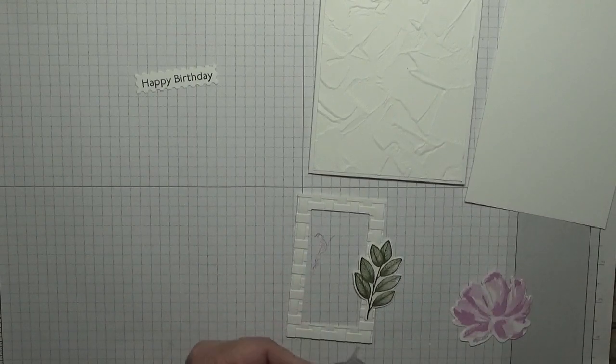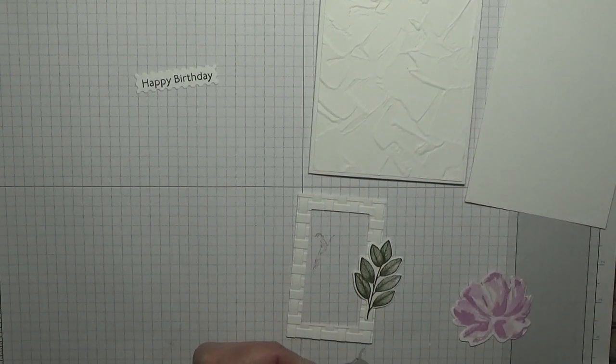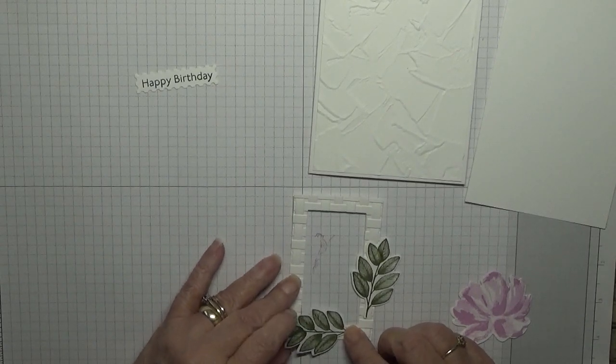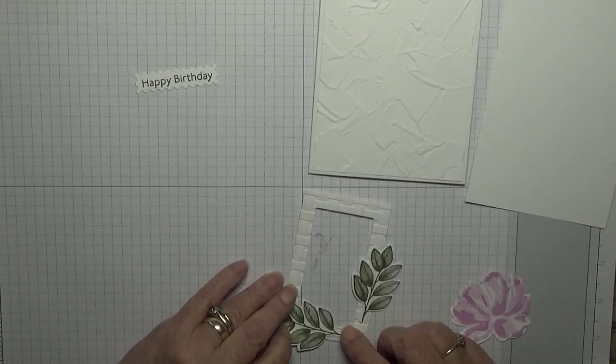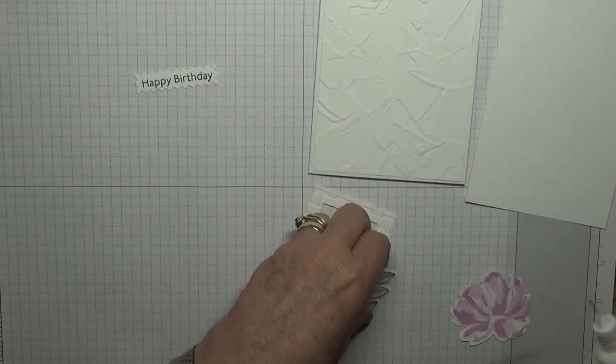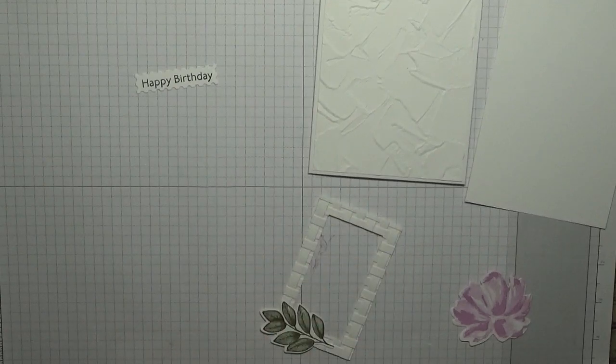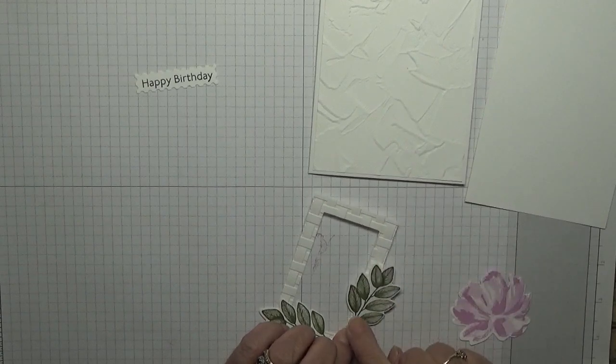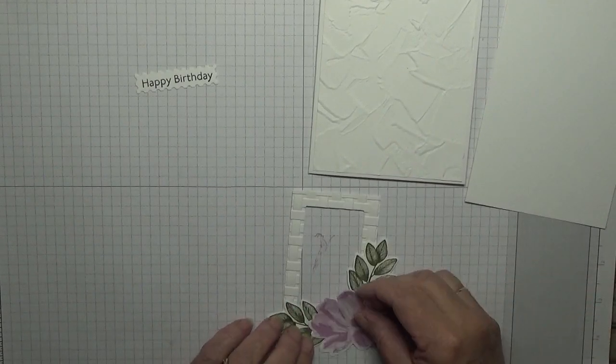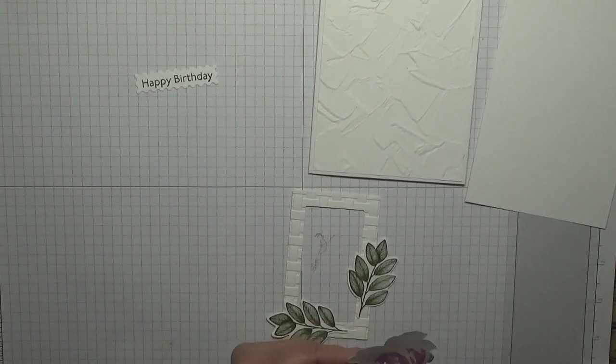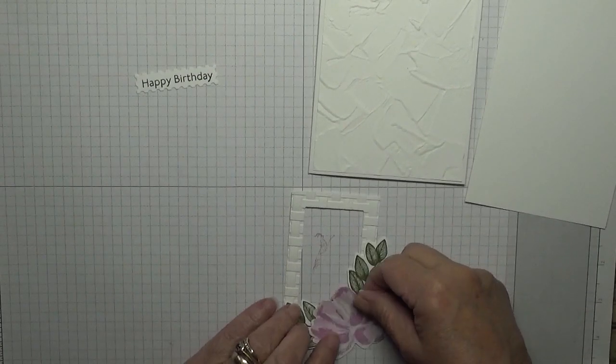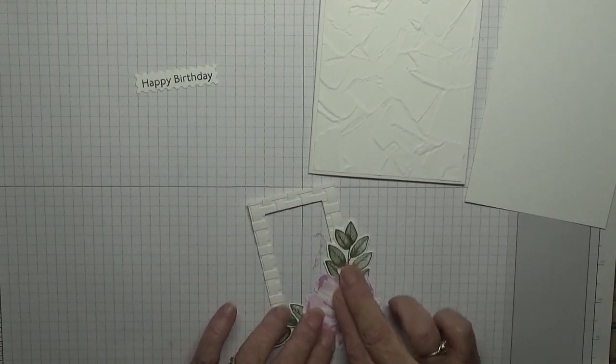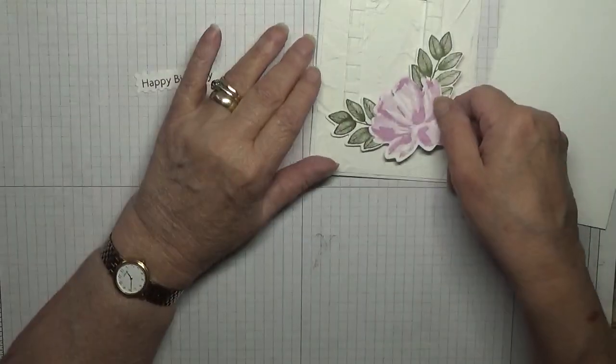So we shall glue. Just put glue down the middle of the leaves. Same with this one. And then this I shall glue across the middle and that will sit on there like that.